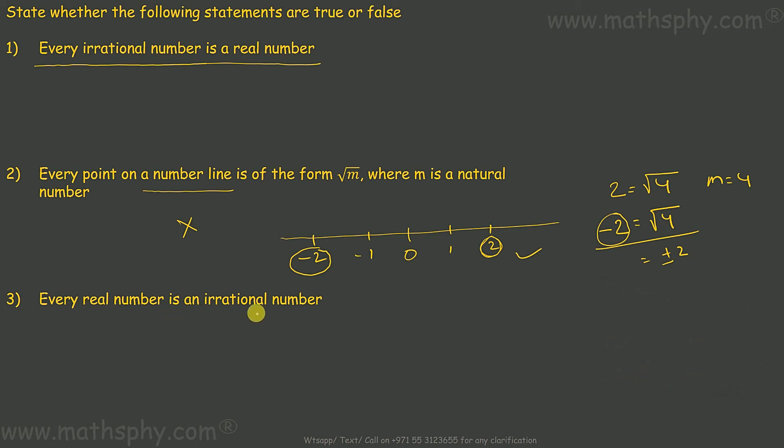Every real number is an irrational number. How can that be possible? 2 is a real number but not irrational. It is natural, it is an integer. It is very much rational, it's not irrational. So that's also false.